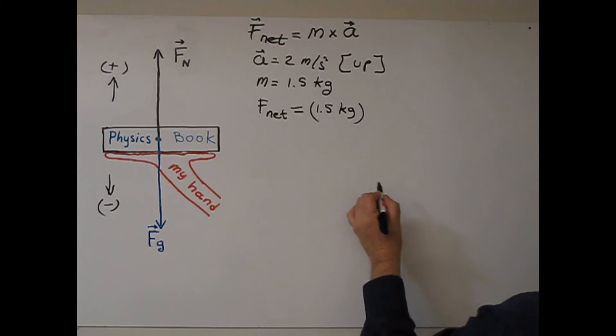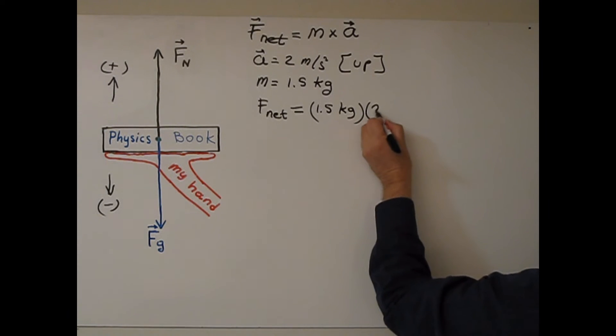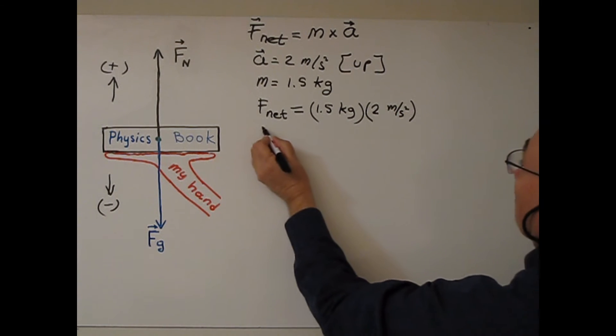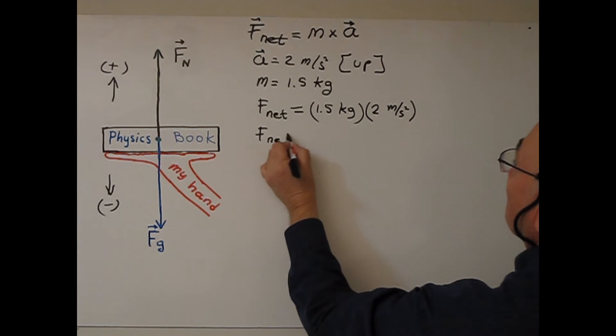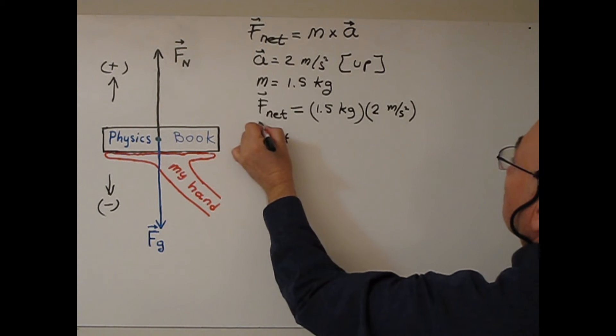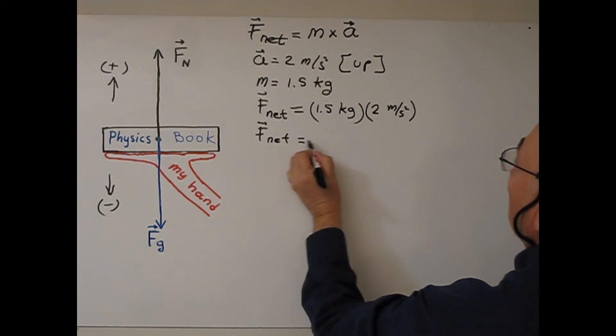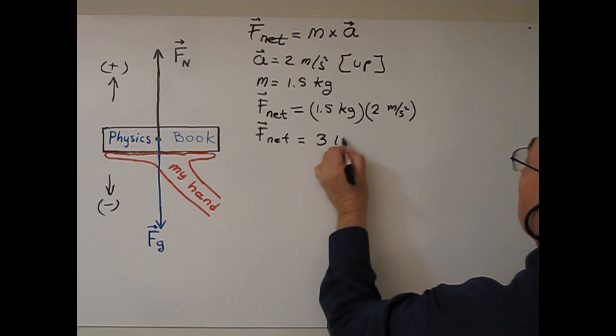So we accept up is positive. So 2 is positive, meter second square. So when I multiply these two numbers, I will get 3 newton.